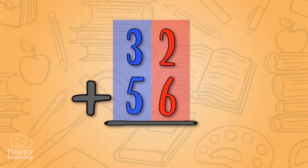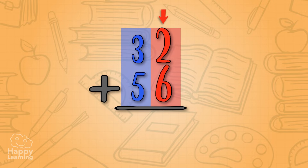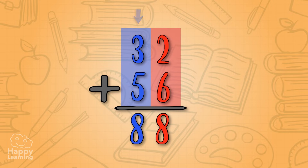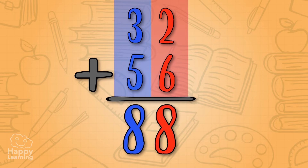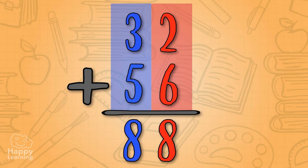Now we need to add the ones from both summands: two plus six equals eight. And now let's add the tens: three plus five equals eight. So the final result is eighty-eight.